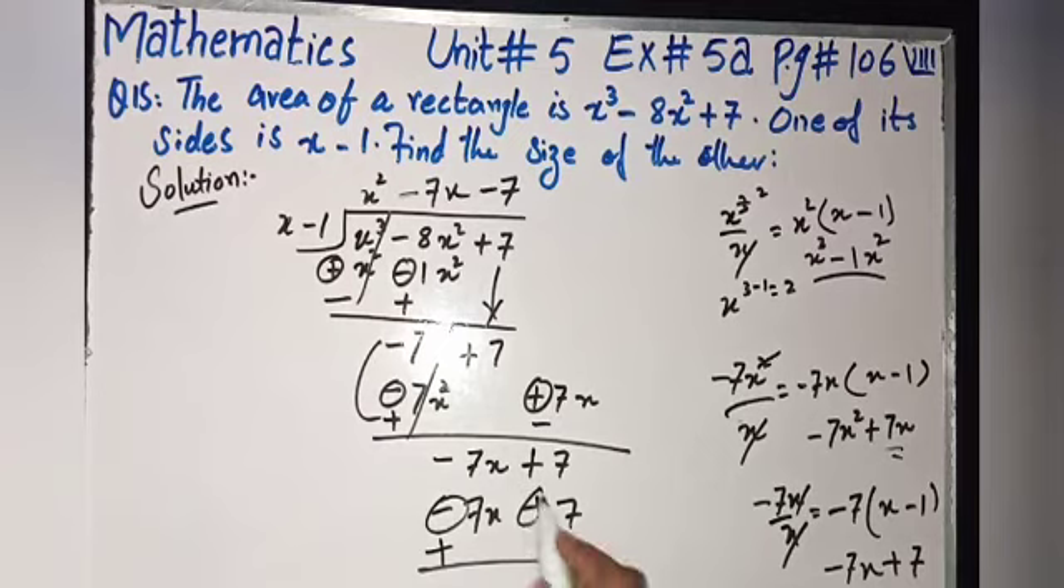Minus 7 multiply by whole divisor: minus plus minus 7x, minus minus 7x plus 7. What is the sign? Minus change into plus, plus change into minus.